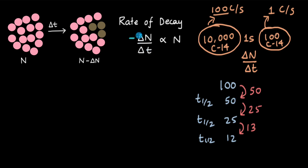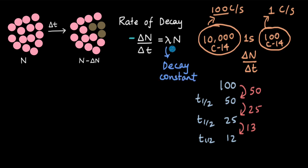So the rate of decay delta n by delta t is proportional to the number of radioactive nuclei N. When we remove this proportionality, we get a constant called the decay constant, denoted by lambda.